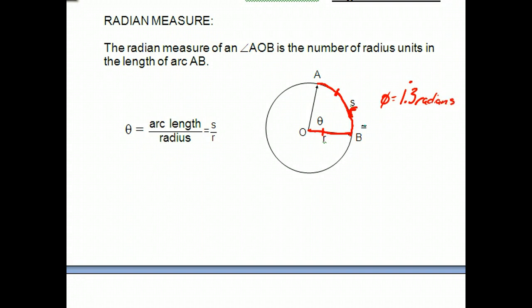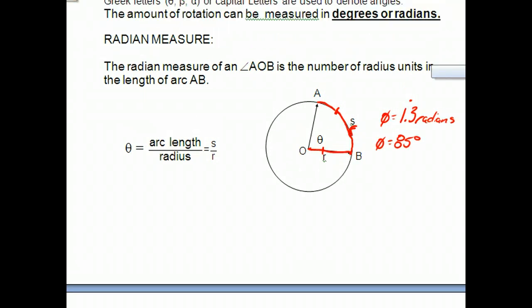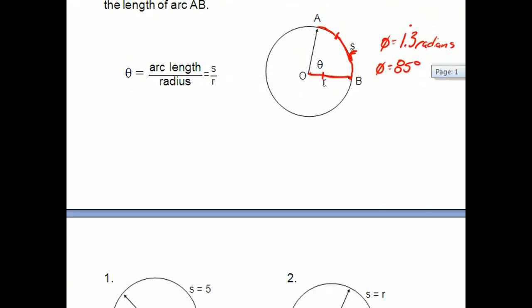Okay, and by the looks of it, that same angle in degrees would be, I don't know, it's a little less than 90, it looks like, so about 85 degrees. Okay, so that's both ways that we can measure an angle, in radians and in degrees.